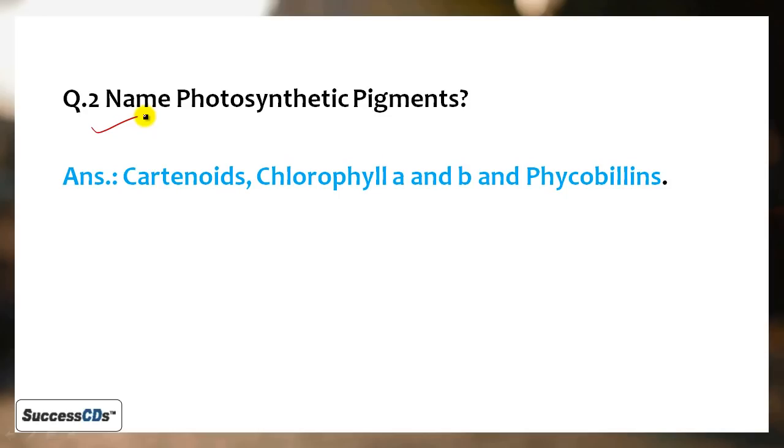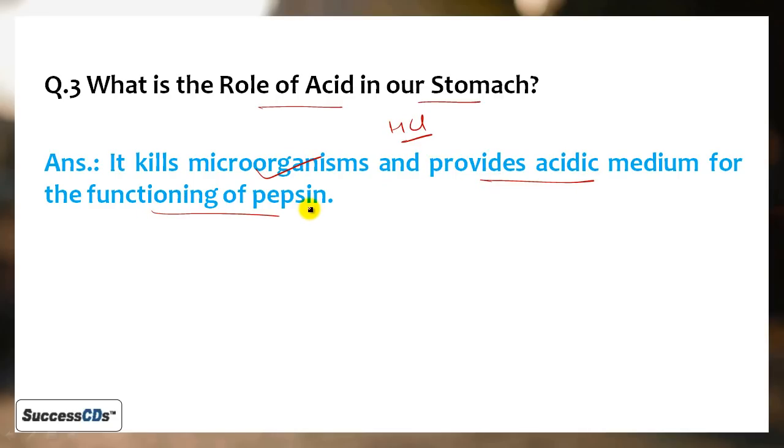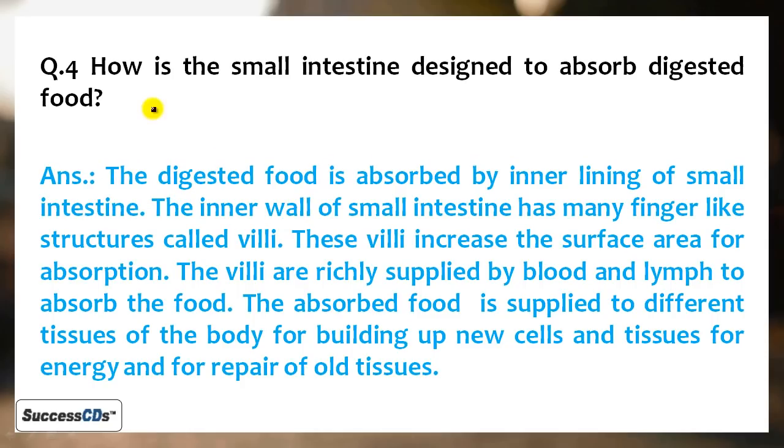Next question: Name some photosynthetic pigments. It is carotenoids, chlorophyll A and B which are best suited for photosynthesis, and phycobilins. What is the role of acid released in the stomach? HCl acid is secreted in the stomach. It kills microorganisms and provides acidic medium for the functioning of pepsin.